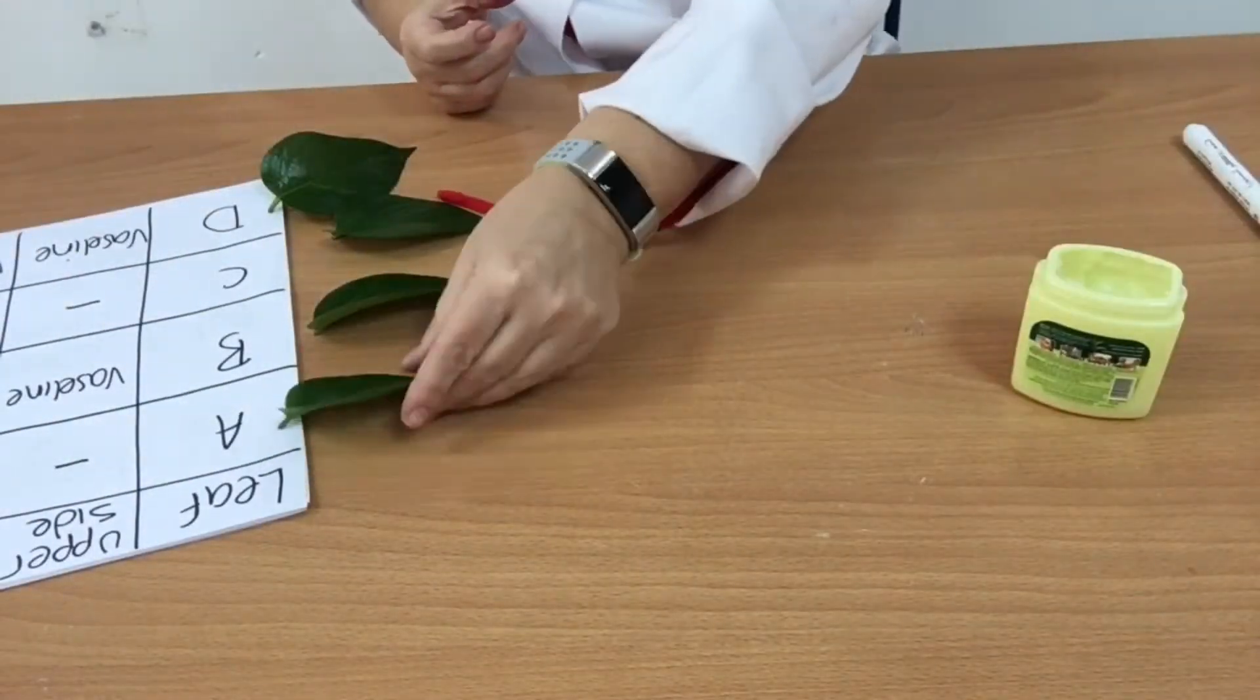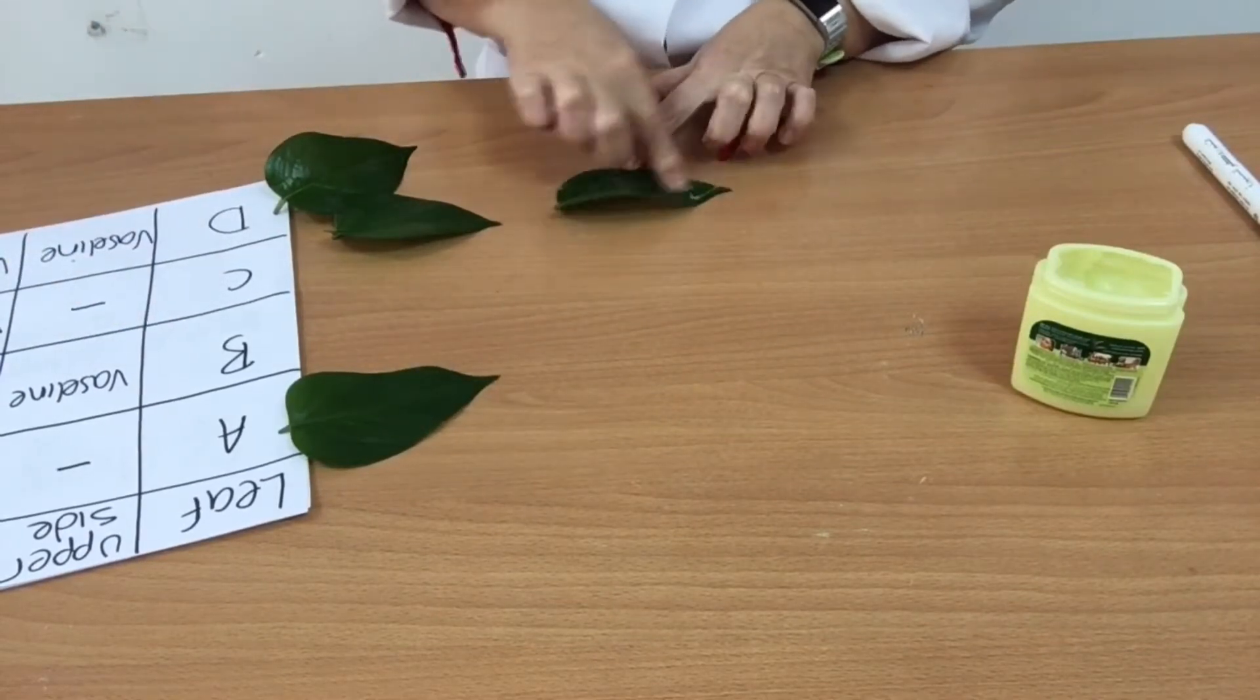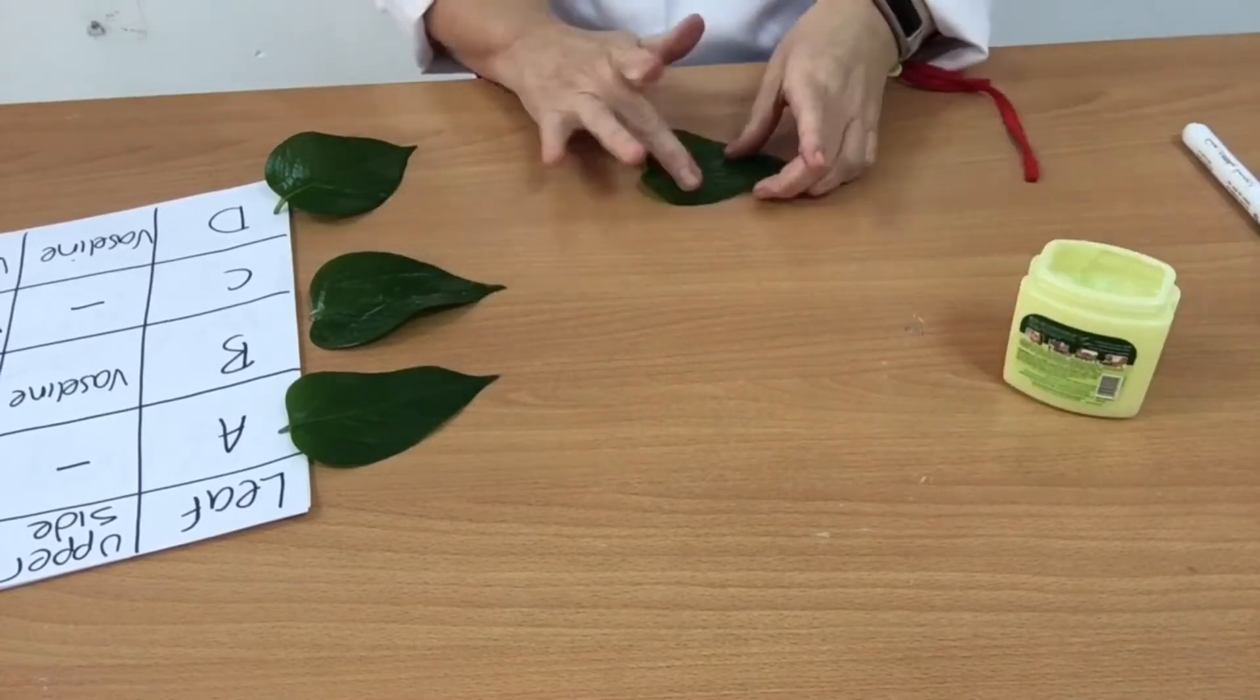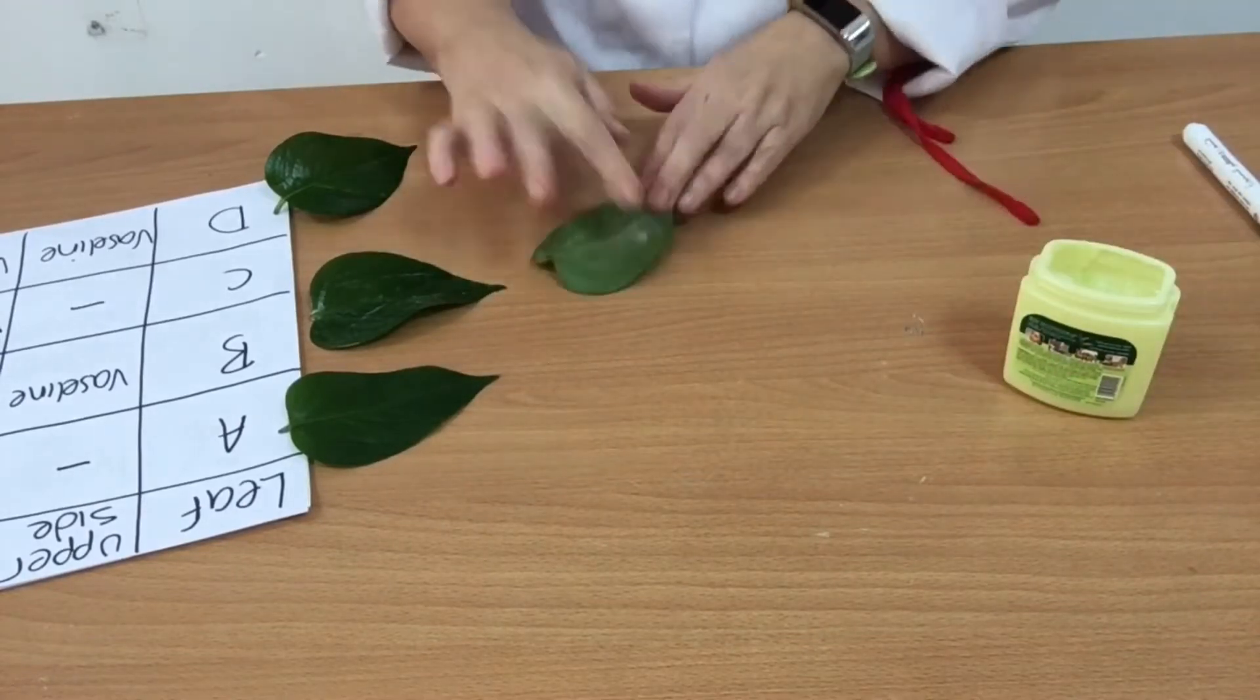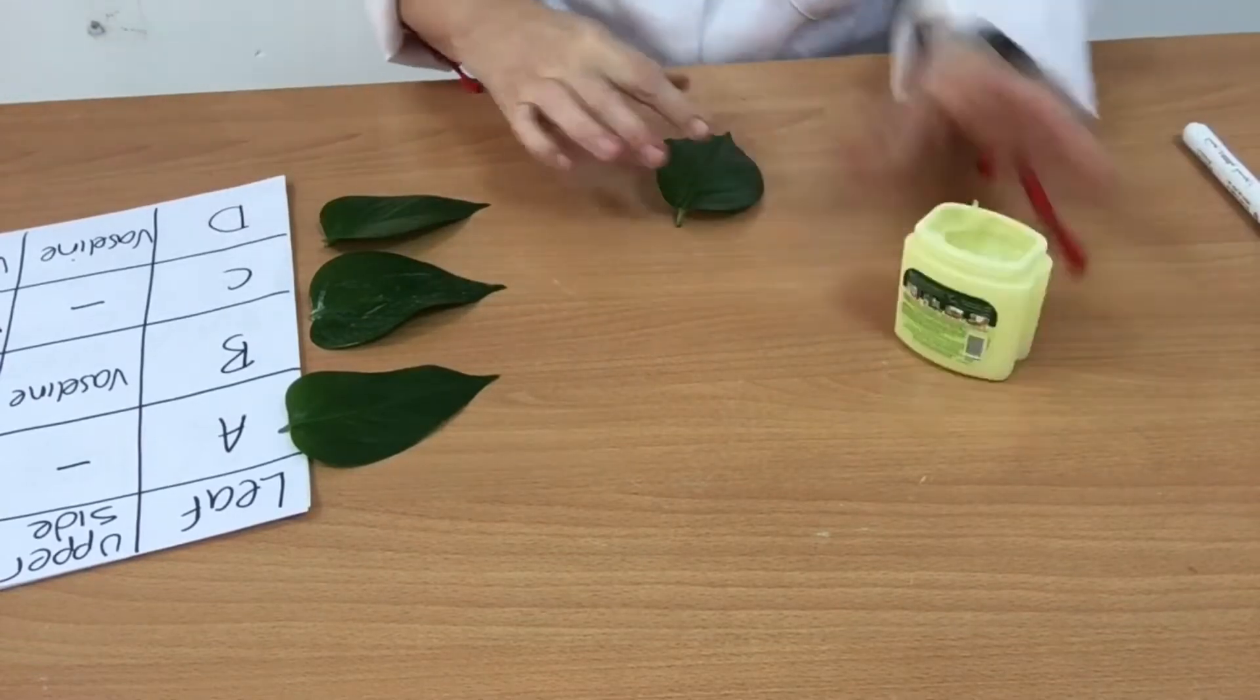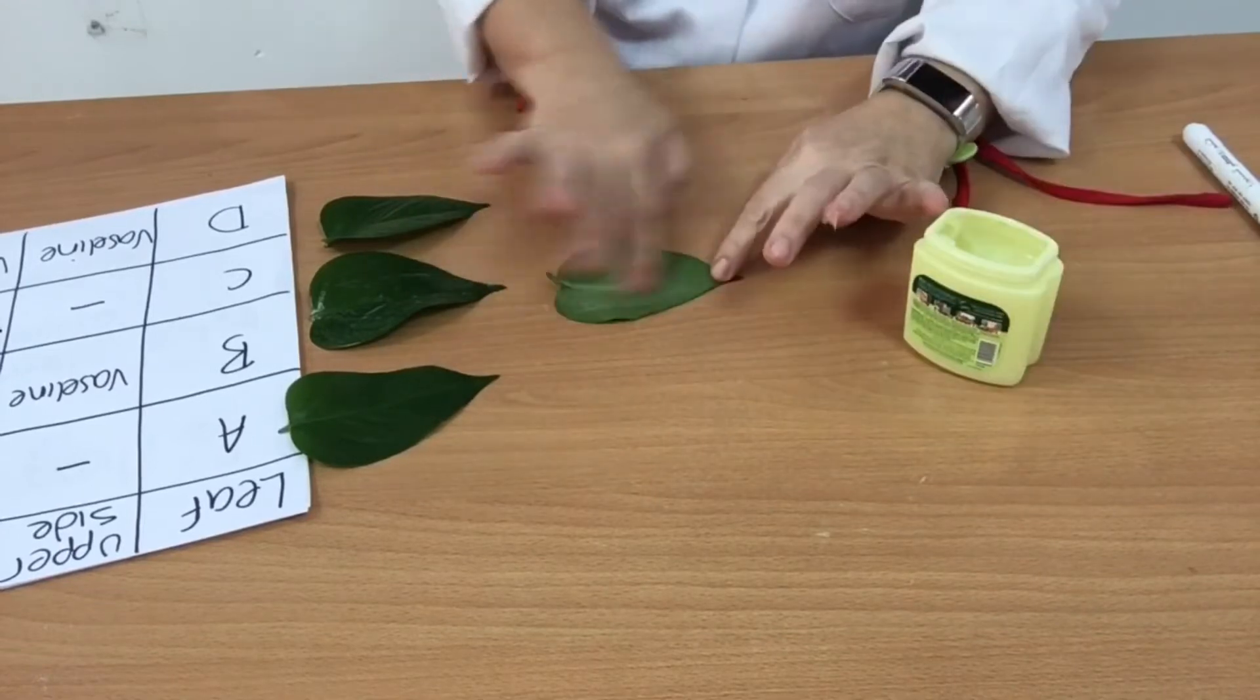Time to apply the Vaseline. The first one doesn't need any Vaseline on either side. The second one gets Vaseline on the top. The third one needs it on the bottom—spread it all over, making sure it's worked into every bit. On the last leaf, I'm doing it on the top, then turning it over to do the bottom.